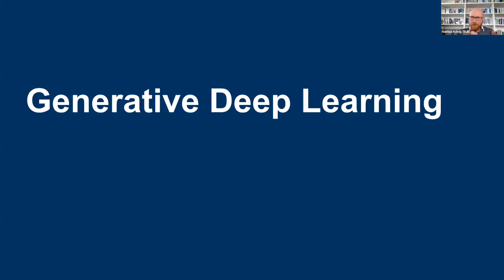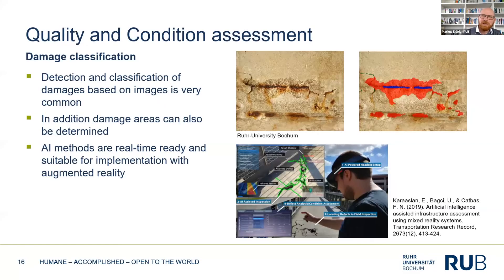Now my second example is about generative deep learning — a different direction. The application is damage classification based on images, which is common and can even be bought as a framework. However, damages are always a little different — different cracks, different sizes — and are not really regular objects. Therefore, synthetic data based on a virtual environment is not really useful here.